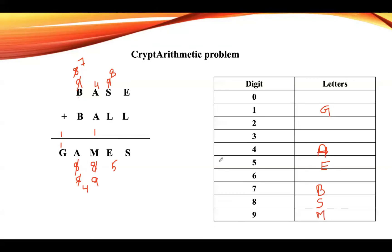Next available largest number is 6, so assign L as 6. 8 plus 6 is 14, but 4 is already assigned. If you take carry here it gives 15, so E would be 5. Now add L plus E: 6 plus 5 is 11. But there are no other letters after this position, so we can't carry. Also, 1 is already assigned to G. So we can't take L as 6.